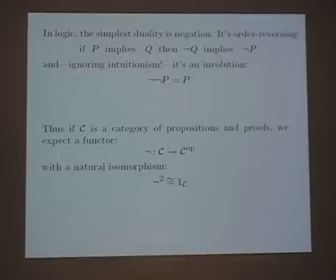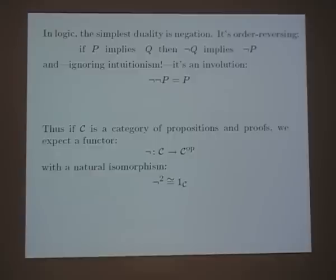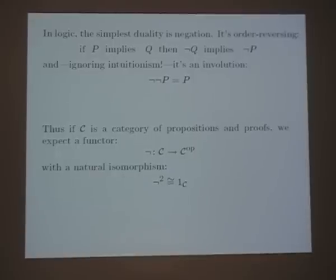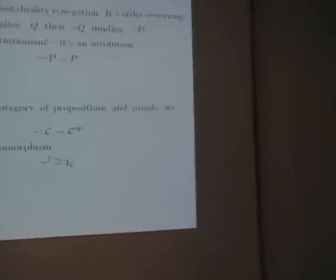How does this duality manifest in more concrete situations? In logic it shows up as negation. In many situations in logic you have a negation operation on propositions: if P implies Q, then not-Q implies not-P. If we ignore intuitionistic logic for the purposes of this talk, then not-not-P equals P. So it's an involution — doing it twice gets you back where you started.